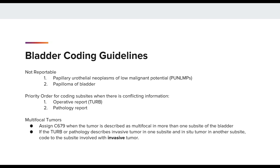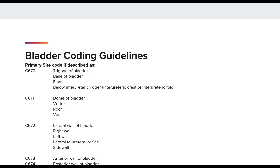We also have guidelines for multifocal tumors. Assign C67.9 when the tumor is described as multifocal in more than one sub-site of the bladder. Similar to the breast guidelines, if you have a pathology with invasive and in situ, code the sub-site involved with the invasive tumor. This is a listing of terms describing the primary site and their respective codes. This listing is helpful if you see a position describing the tumor as a site you may not be familiar with, such as below the interureteric ridge, or referred to as the crest or fold, coded to C67.0.